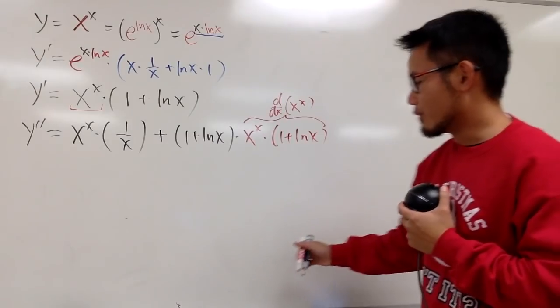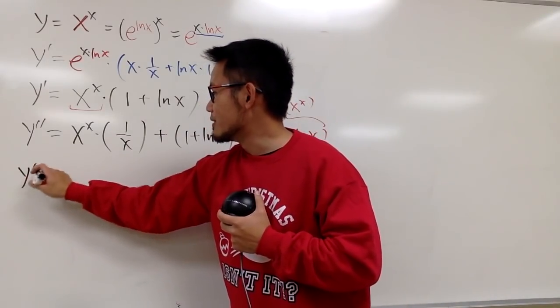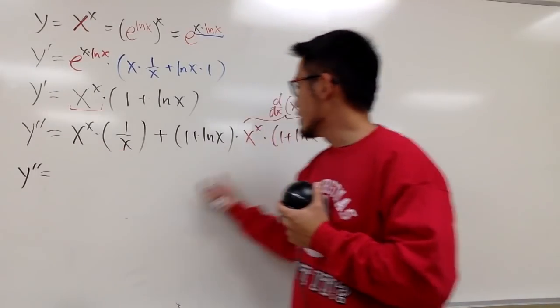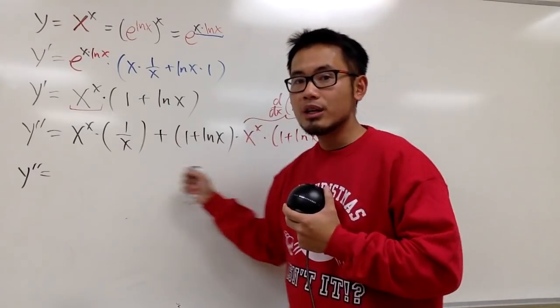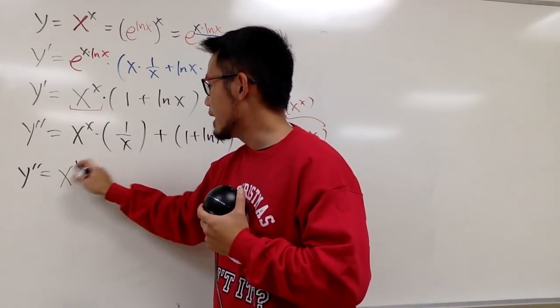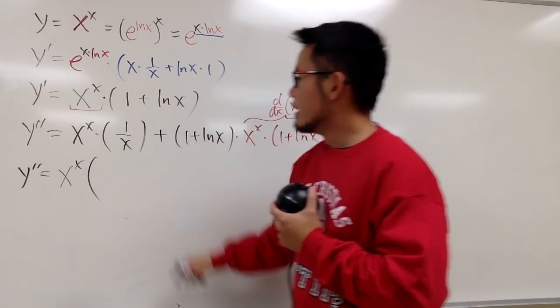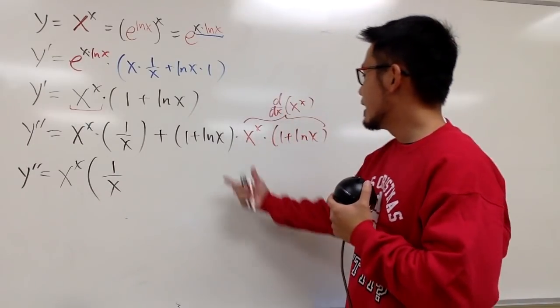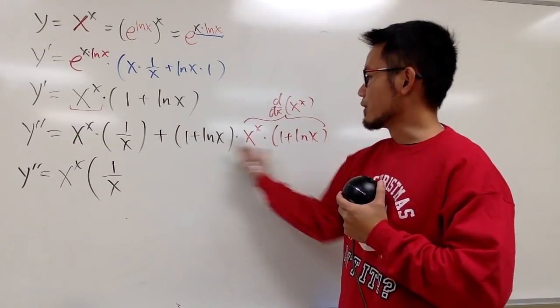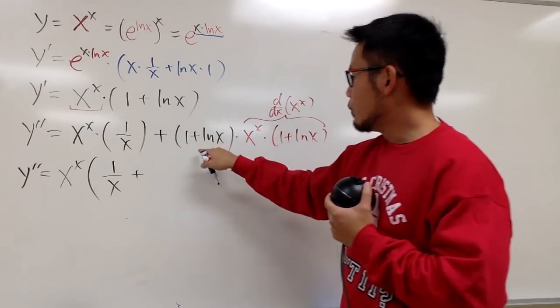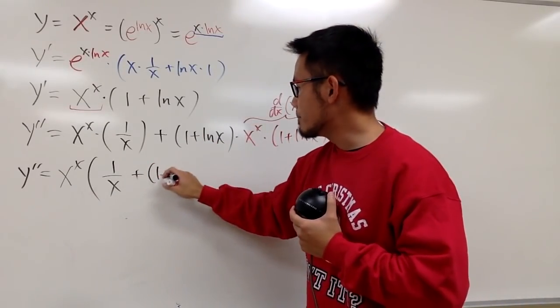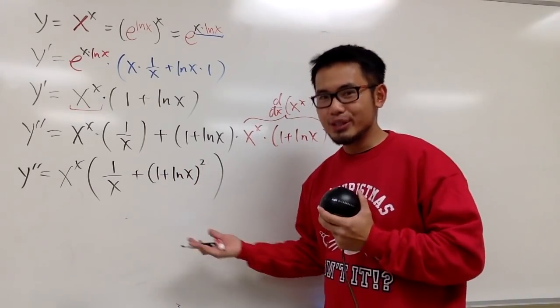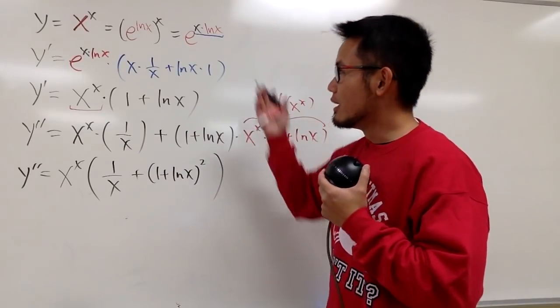Okay, is there anything that we can do? Of course, there are a few things that we can do. We can factor things out, and we can get a second derivative in a nicer form. This term and that term, they both have x to the x power. So, let's factor that out. So, we will have x to the x all the way to the front. And then, the remaining thing for the first part right here is 1 over x. And then, this and that. For the second part, we have plus 1 plus ln x times 1 plus ln x. So, that's 1 plus ln x and then square. So, this is pretty much it. This is the second derivative of x to the x.